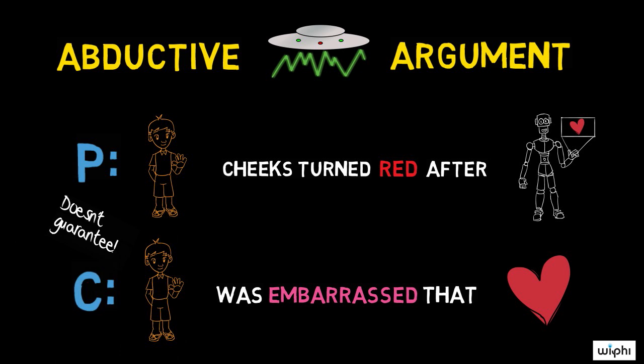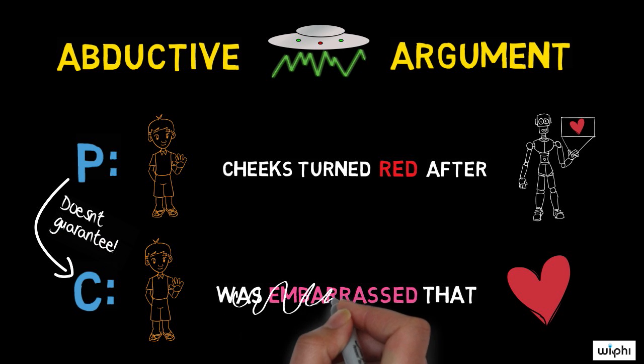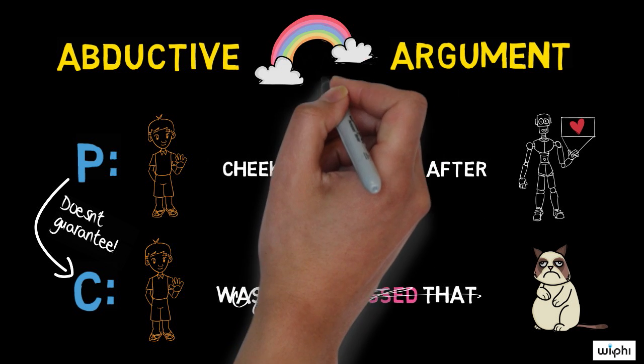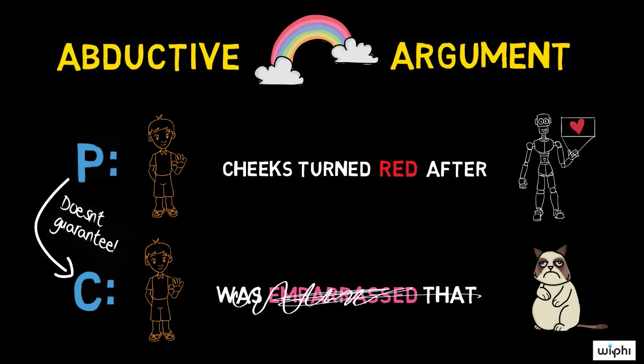Notice that the premise doesn't guarantee that the conclusion is true. Something else might explain it instead. Maybe Charlie was eating a jalapeno and his cheeks turned red because it was so spicy. Or maybe he just got scratched by a cat and he's having an allergic reaction. If you let your imagination rip, you'll be able to think of other possible answers to the question, why did Charlie's cheeks turn red too?